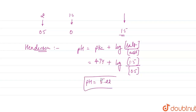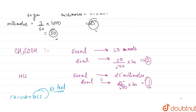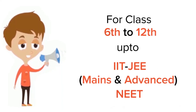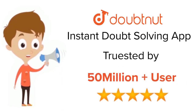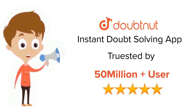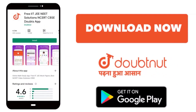This is our answer. Looking at the options in the question, option A is our answer. For Class 6 to 12, IIT JEE and NEET level — trusted by more than 5 crore students. Download DoubtNet app today.